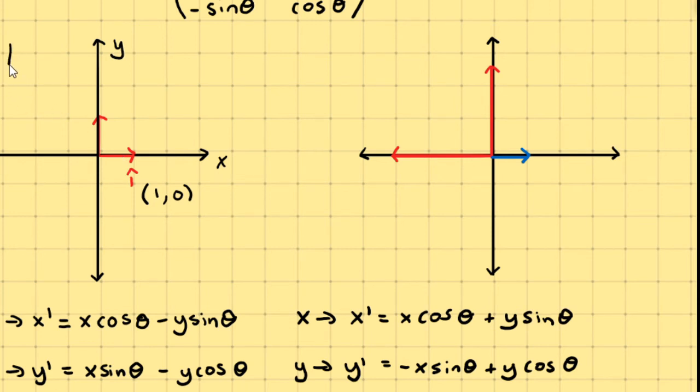So in this first instance, we're going to do an active transformation. Remember, an active transformation is taking the object itself, the vector in this case, and transforming it while keeping the coordinate system the same.